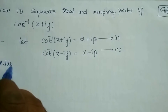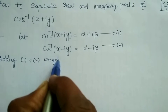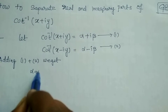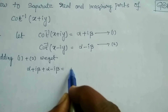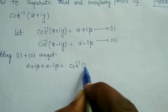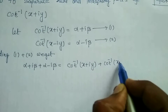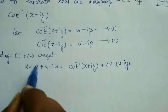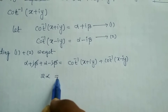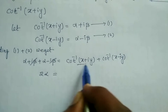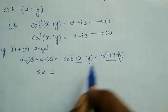Adding equations 1 and 2, we get alpha plus i beta plus alpha minus i beta is equal to cot inverse of x plus i y, plus cot inverse of x minus i y. The i beta terms cancel, giving 2 alpha. This is in the form of cot inverse x plus cot inverse y.